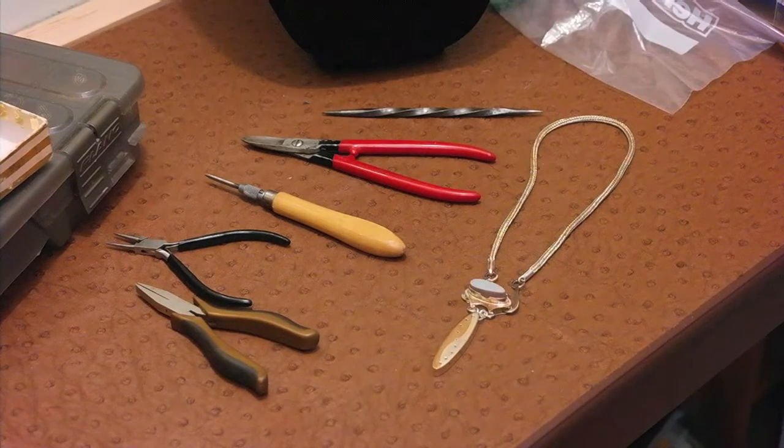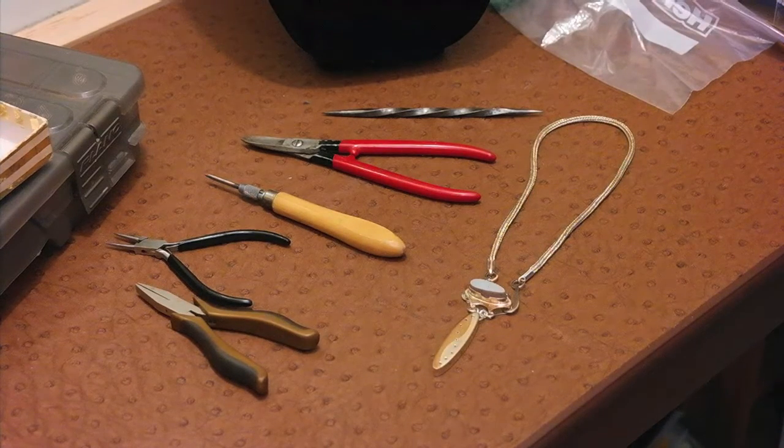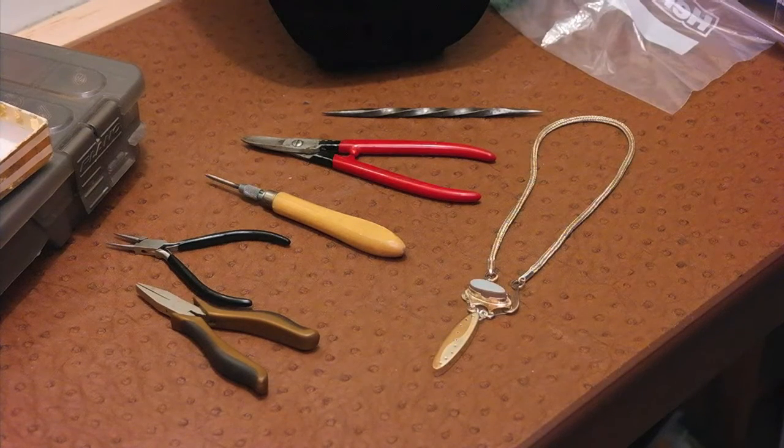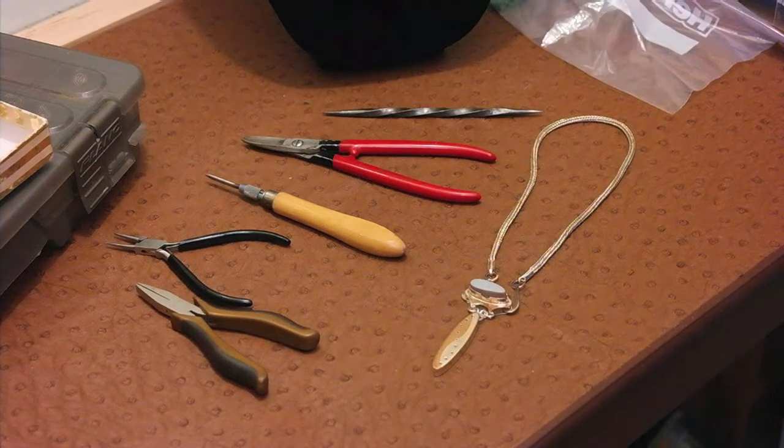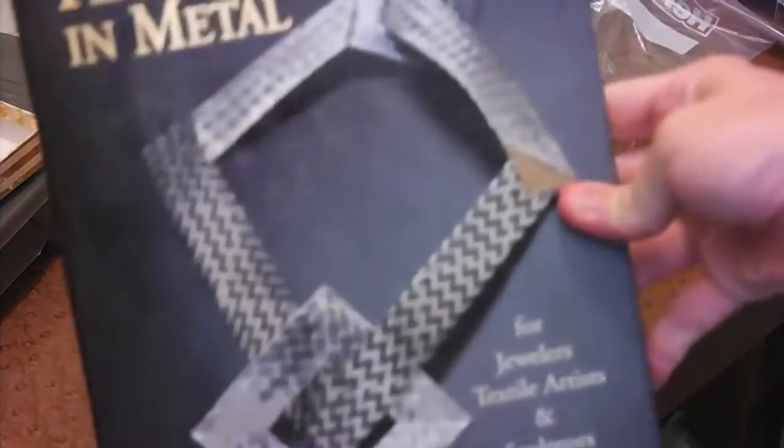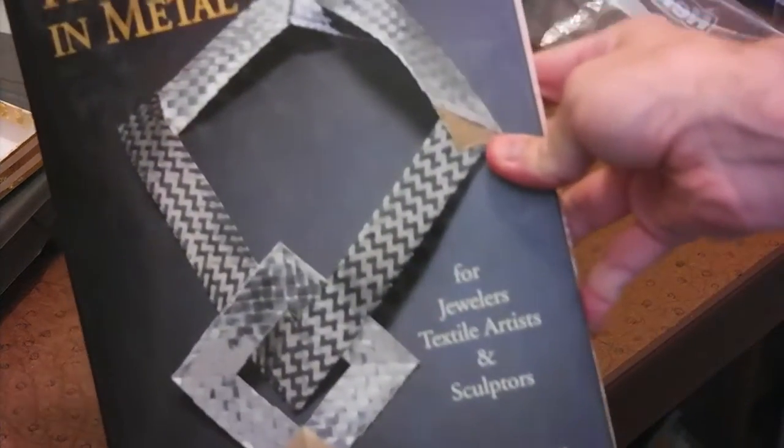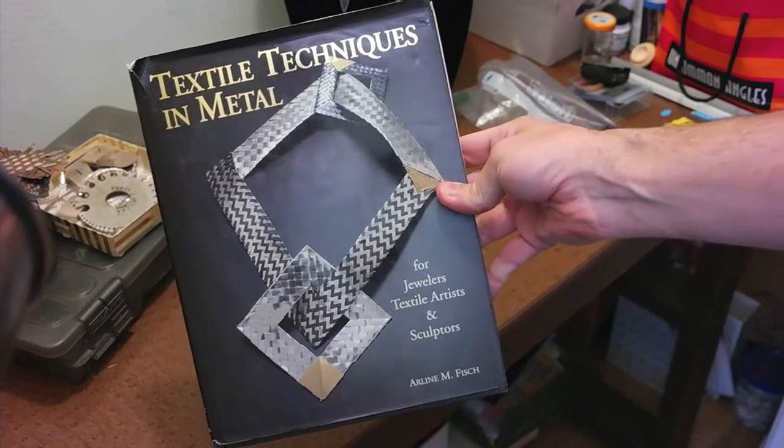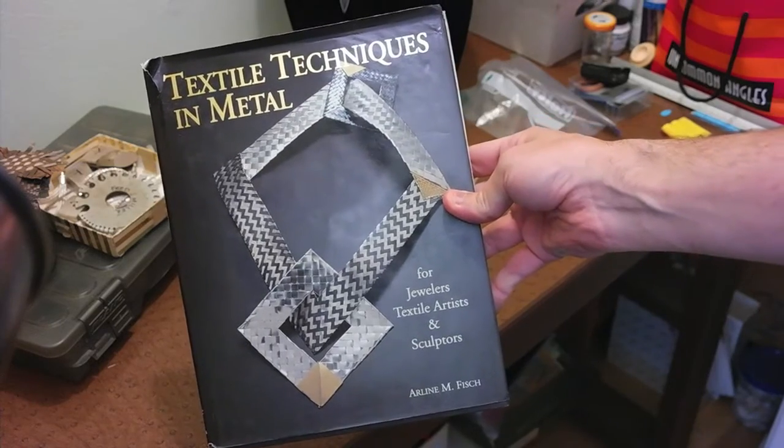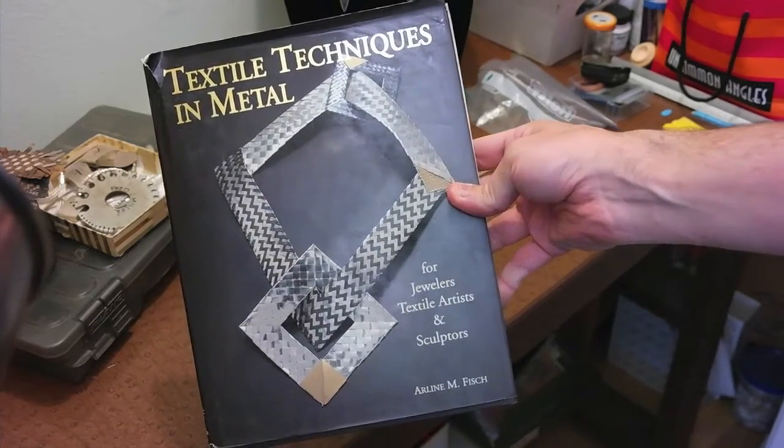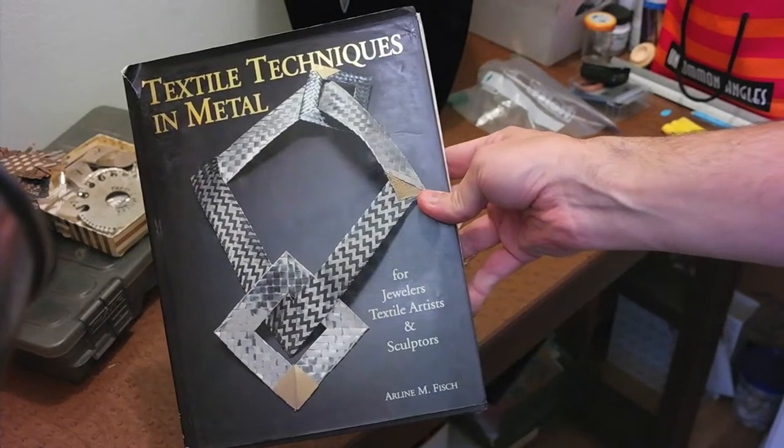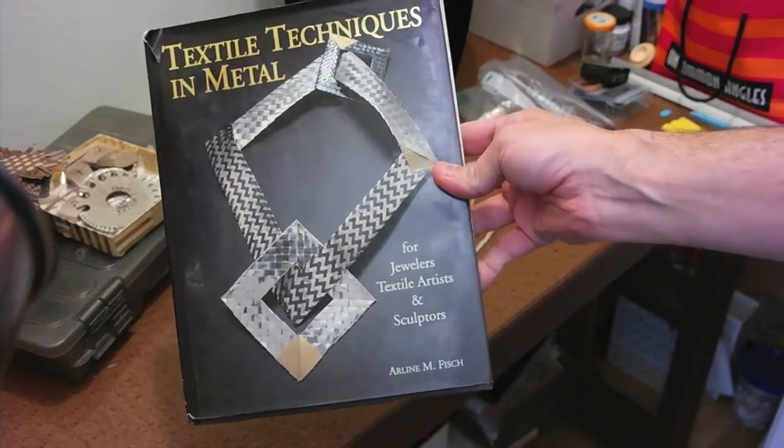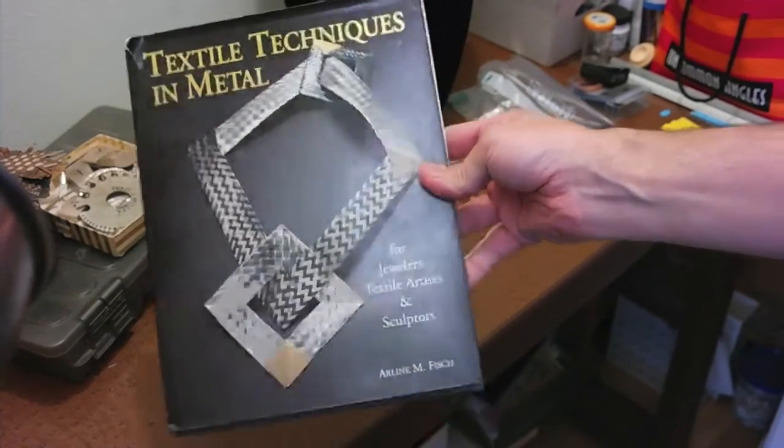First off, let me say that for those of you that don't know about chain making, there's a lot of books you can get. One of them being, probably one of the best ones, is this one - The Textile Techniques in Metal. It doesn't really have anything specific to chain making, but there's a lot of really great techniques in here on weaving different types of metal. So it's a good book. There's like three or four different versions. I have two of the versions, but this is a great book.